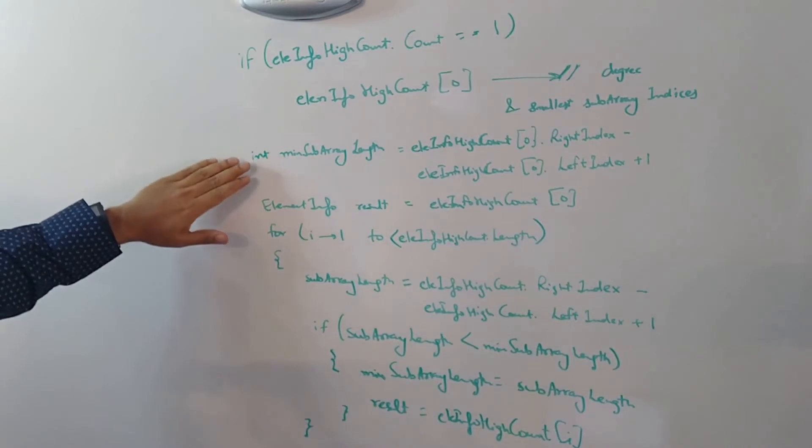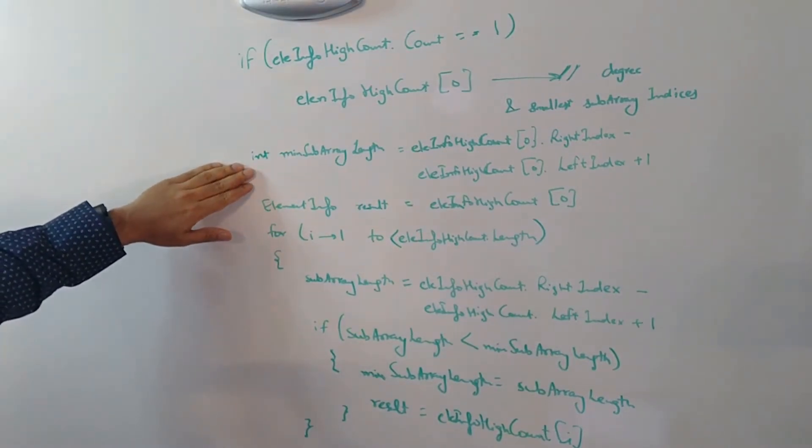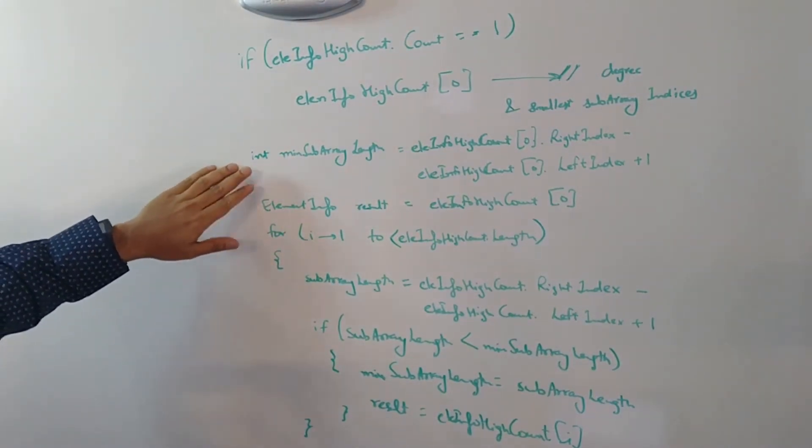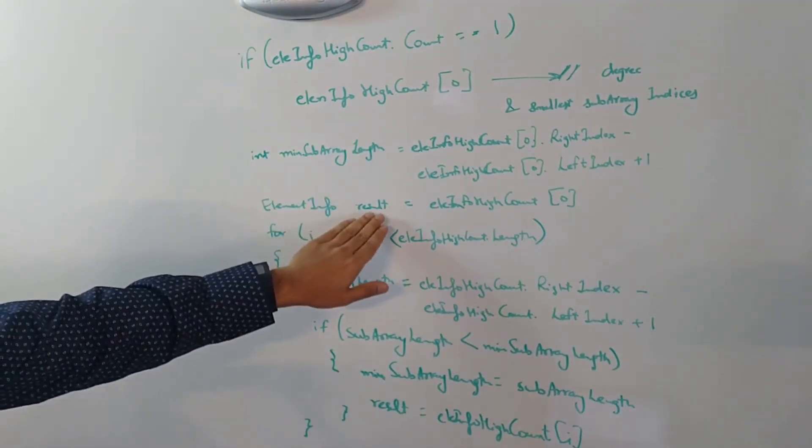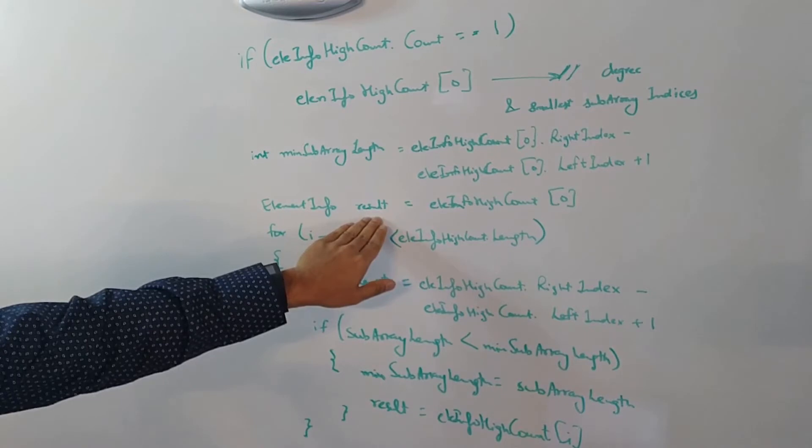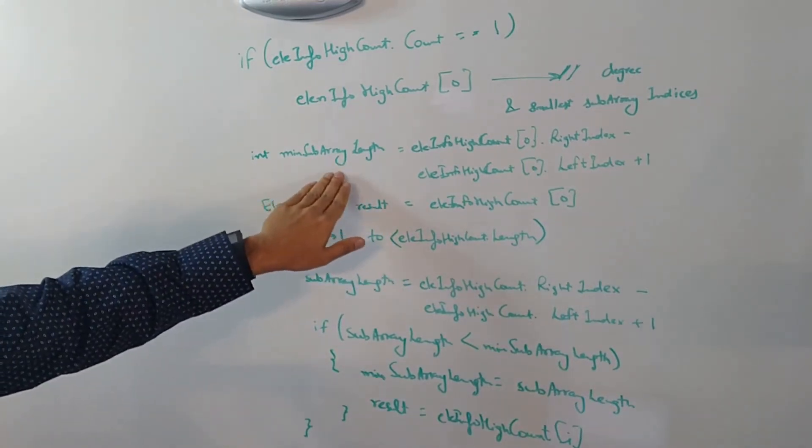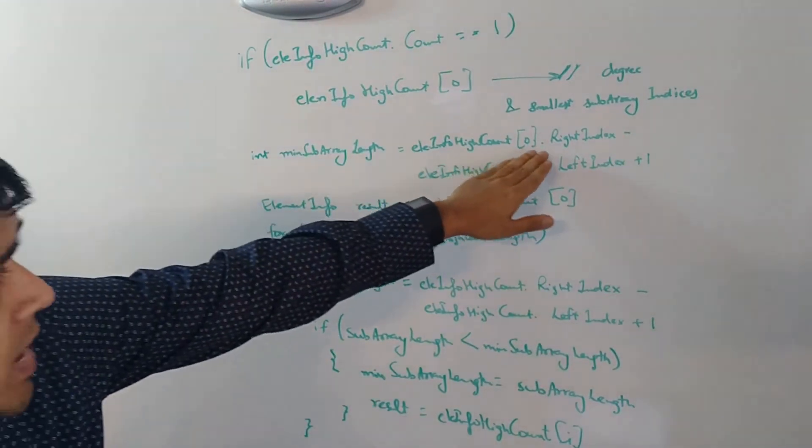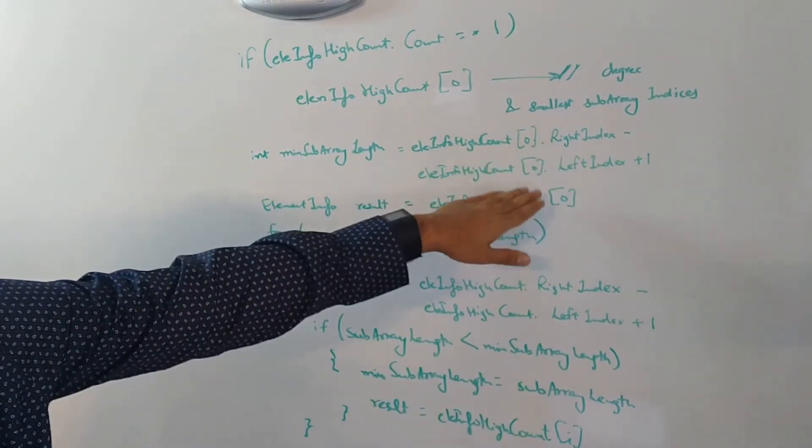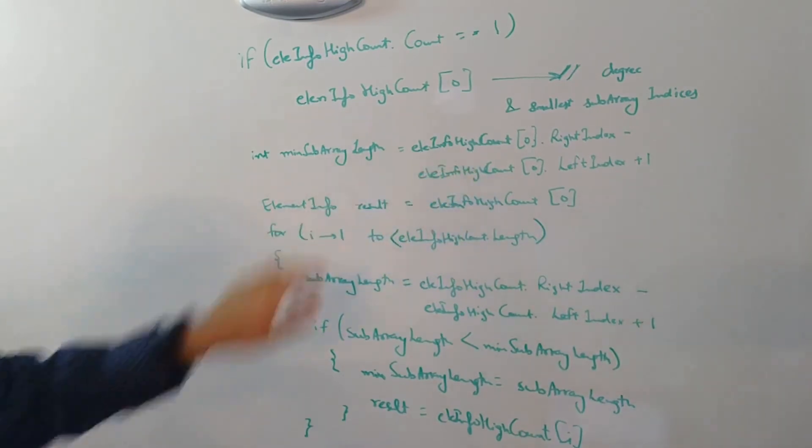If there are more than one elements in our list, then we start off with our first element in the list and we keep track of that element using this variable called result and we assume that that is our minimum subarray length by calculating the right index minus left index plus one for that first element.